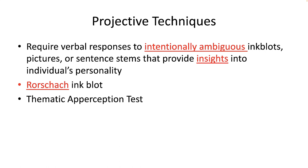With the TAT, for example, you might be asked to explain what you see in a drawing of two men in an office — one is old and seated, and the other is young and standing. If you say the young man is thanking the old man for his years of mentorship, you might infer respect. If, on the other hand, you say the young man is asking the old man when he is going to retire so he can step into the job and show everyone how it should be done, you might infer something completely different.